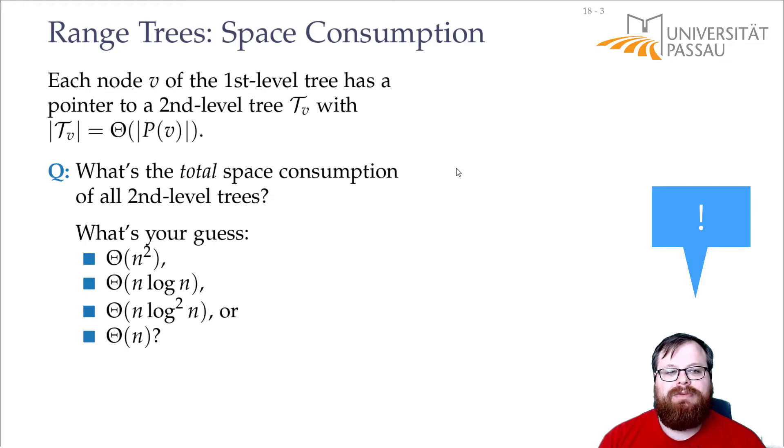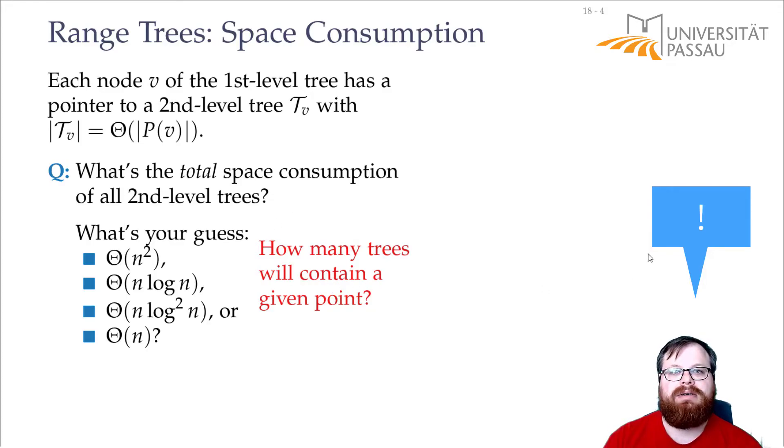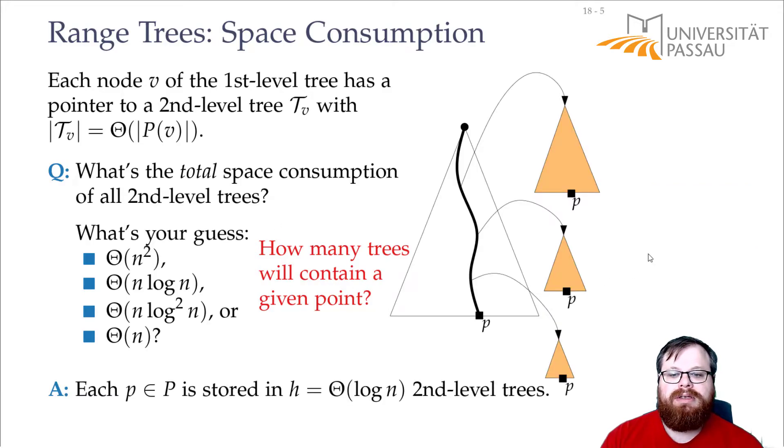To analyze what it is, we don't count how many of these trees we have and how many nodes they have, but we look at a single vertex. So let's look at a single point of our input set. And we want to count how many of these second level trees contain it. So we have a single point here that corresponds to a leaf. And on this path from the root to the leaf, all these second level trees contain the point of p.